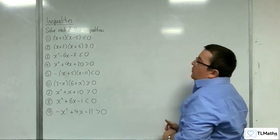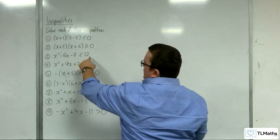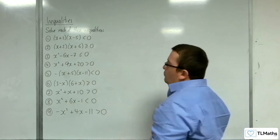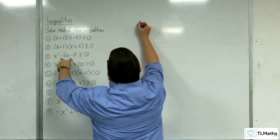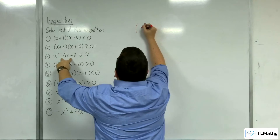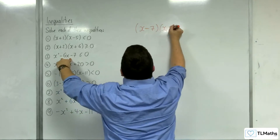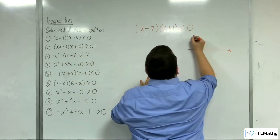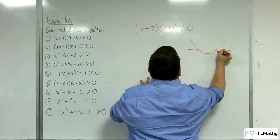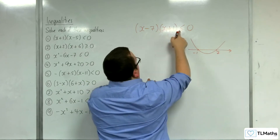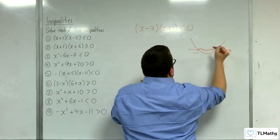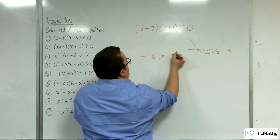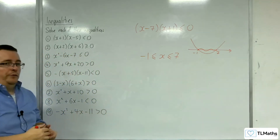Number three: x² − 6x − 7 ≤ 0. We've got 0 on the right-hand side but it's not factorised. This factorises to (x−7)(x+1) ≤ 0. Sketch the graph — it goes through −1 and 7. Where is the graph below or equal to the x-axis? That gives x ≥ −1 but x ≤ 7.